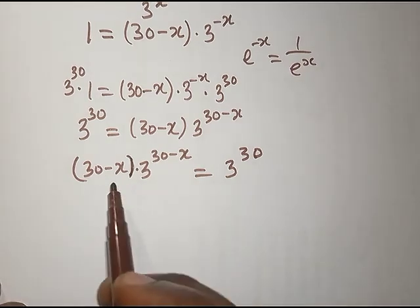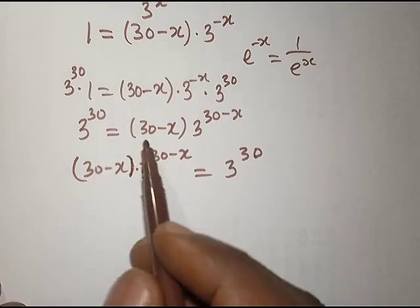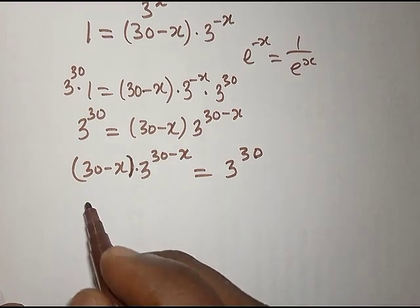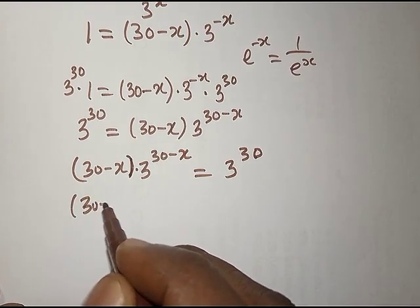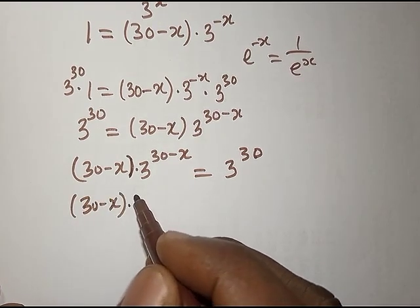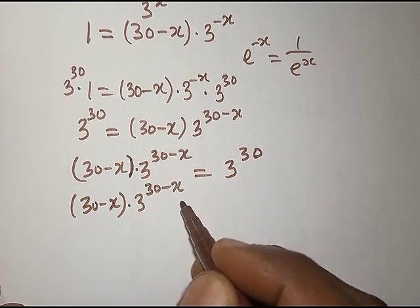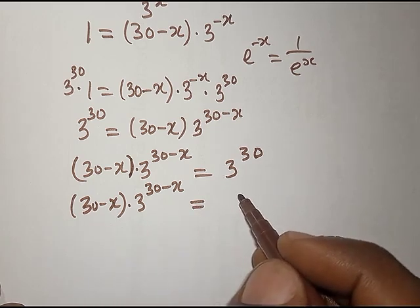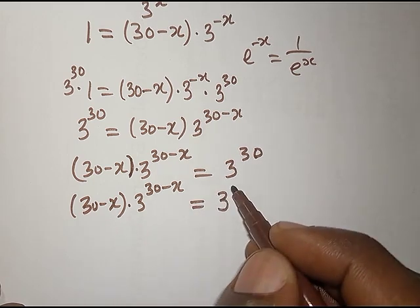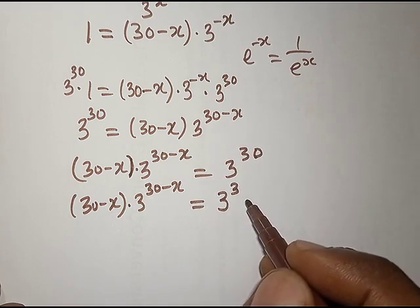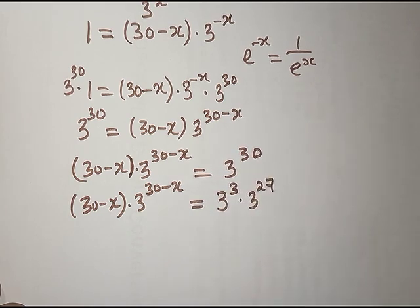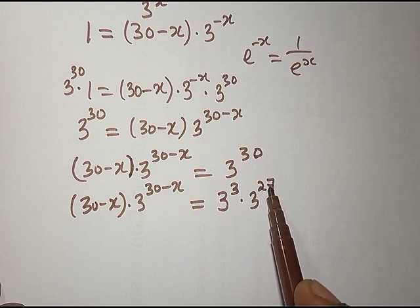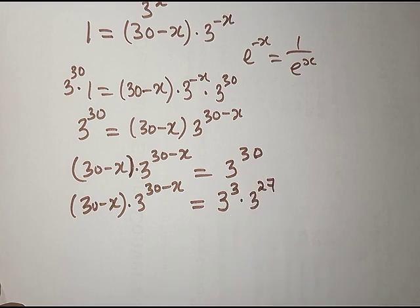Interchanging sides we have (30 − x) · 3^(30 − x) = 3^30. I can write 3^30 as 3^3 · 3^27, since 3 + 27 = 30, giving (30 − x) · 3^(30 − x) = 3^3 · 3^27 = 27 · 3^27.